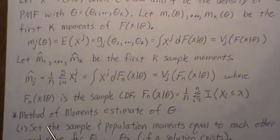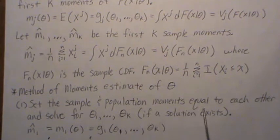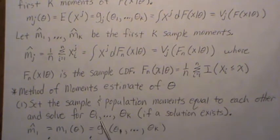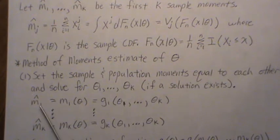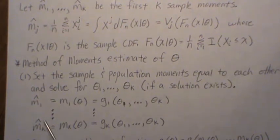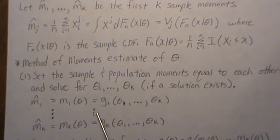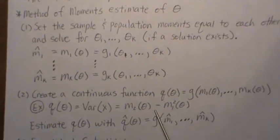The method of moments estimate for θ is this: set the sample and population moments equal to each other and solve for the θs, assuming the solution exists. Sometimes it doesn't exist. What that means: take the sample moment, set it equal to the population moment, which remember is a function of the θs. Do that k times because there's k equations, k unknowns, and then you solve for the θs. That's your method of moments estimate. It's really that simple, and that's one of the beauties of method of moments—the simplicity behind it.